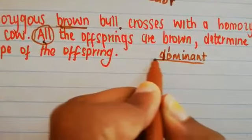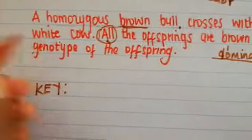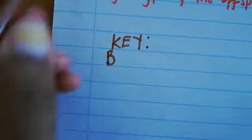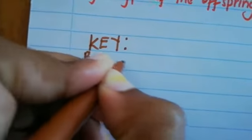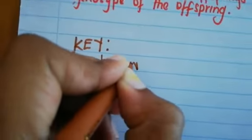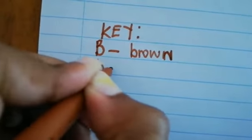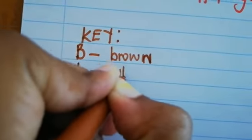So already we know that brown is dominant and white is going to be recessive. So you go to your key and you say brown, capital letter B, represents the color brown. And then small letter b represents white, which is recessive.